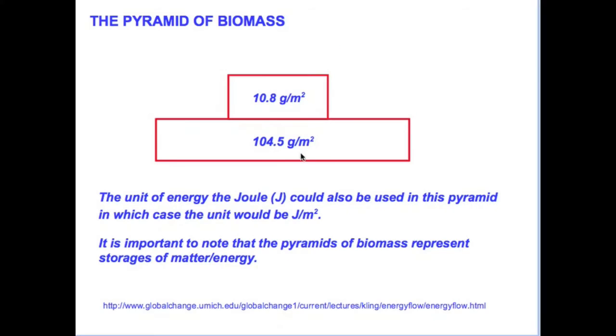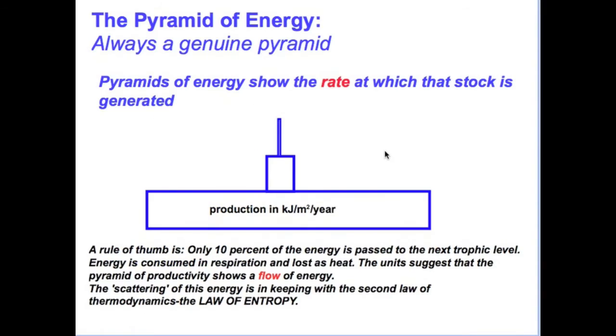Whether that level be the autotrophs or the producers or the first level heterotrophs, the amount of energy per unit of area over an extended period of time. When we consider this productivity, energy is expressed in the units of joules or kilojoules per square meter of area per unit of time, like a year.